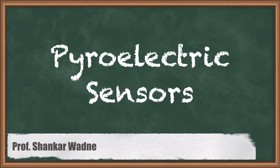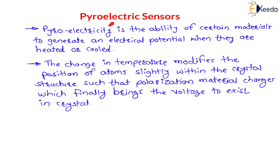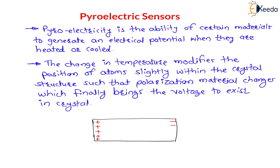Hello my dear students. In this lecture we are going to understand pyroelectric sensors. Pyroelectricity is the ability of certain materials to generate an electric potential when they are heated or cooled. If you heat this material the temperature increases; if you cool it the temperature decreases. Because of heating and cooling, an electric potential is generated — a positive terminal on one side and a negative terminal on the other — so a potential difference is created and current starts flowing. This is called pyroelectricity.